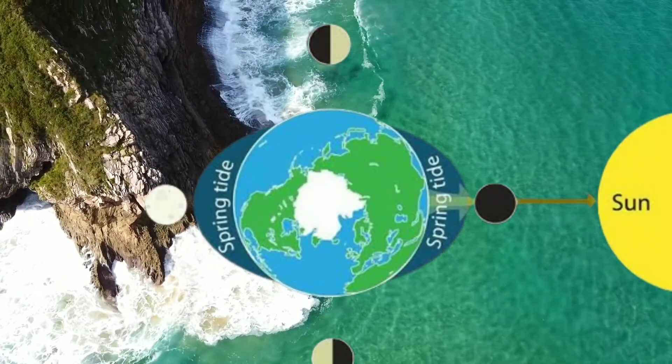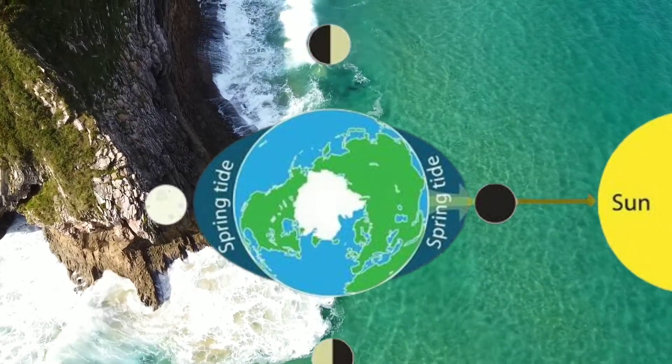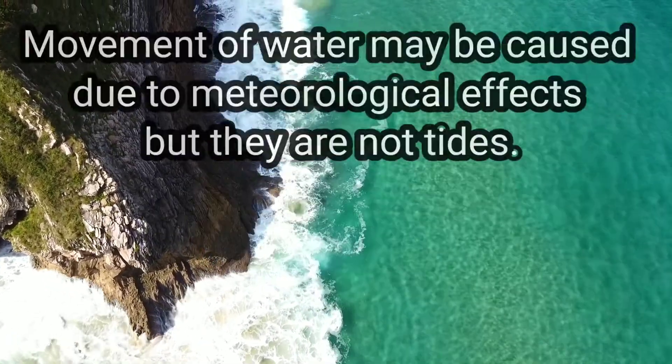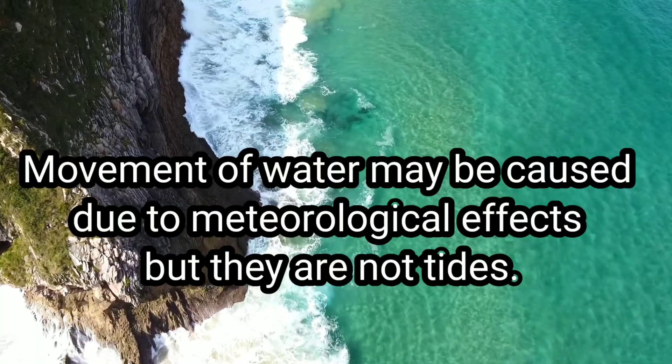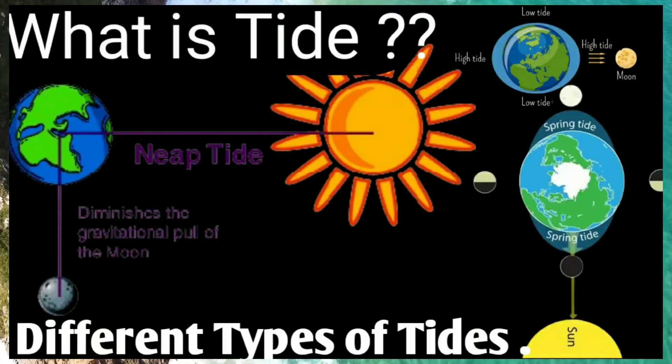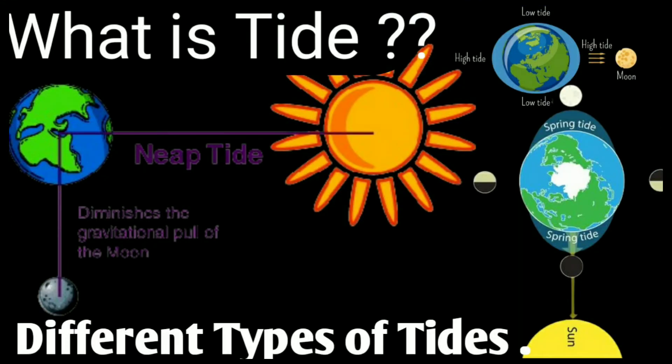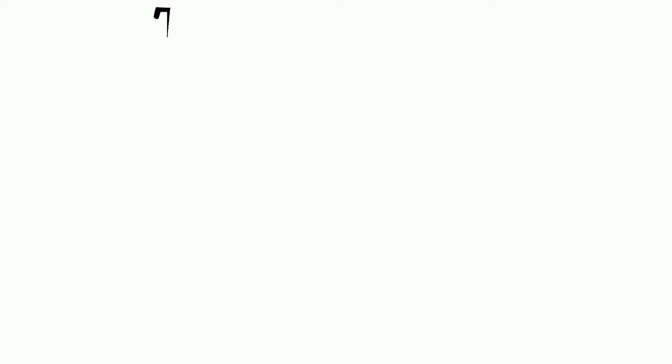Movement of water may be caused by meteorological effects, but they are not called tides. They are called surges. So now let us see what are different types of tides.